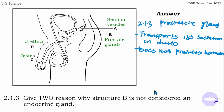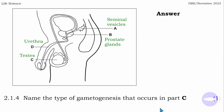For question 2.1.3, the reasons why the prostate gland is not considered an endocrine gland are: its secretion travels via ducts, and it does not produce hormones.